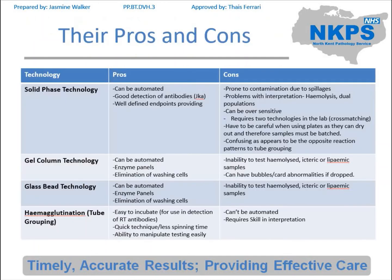Now we've gone through that, we're just going to go through some of the pros and cons, starting with solid phase technology. It can be automated, it has good detection of antibodies, and it's got well-defined end points so you know exactly how long things should be incubated and spun for — there's no variance there. However, it's prone to contamination due to spillages. There are problems with interpretation — if you were to get a dual population you would not be able to tell it's a dual population, it would just look really weird. It can also be over-sensitive, so you can quite often get positive results that aren't actually indicative of any clinically significant antibodies.